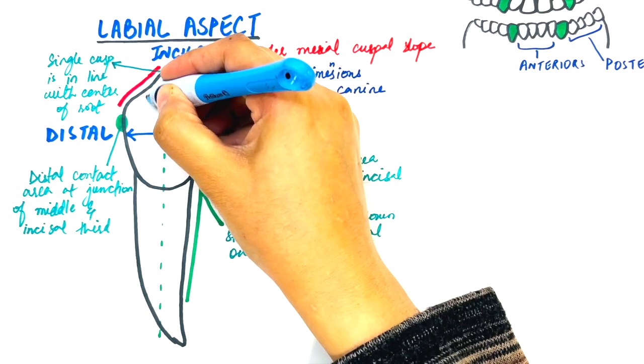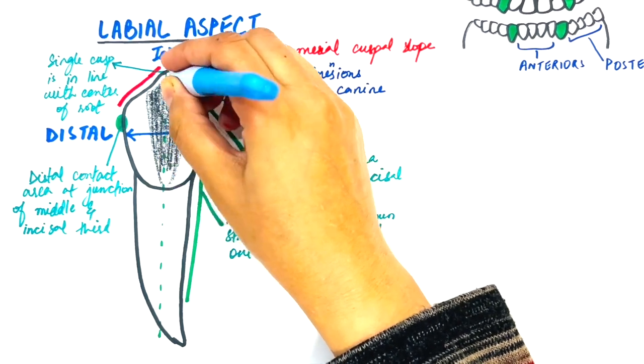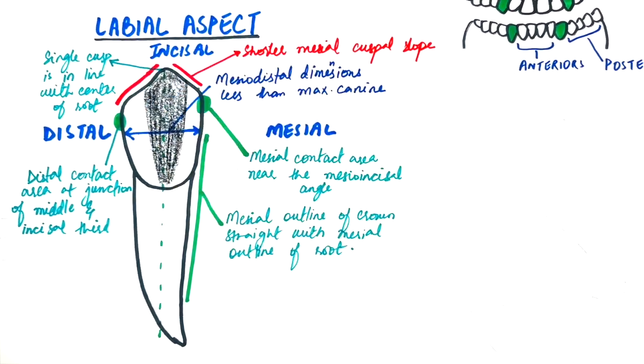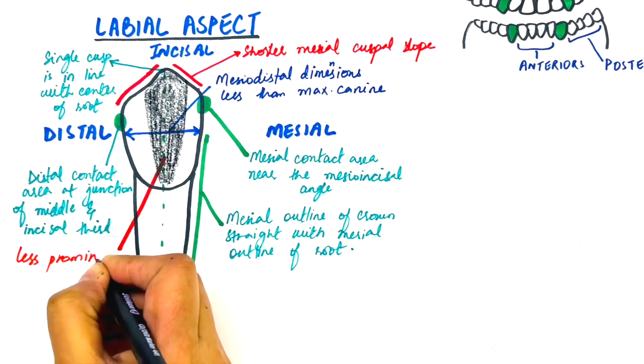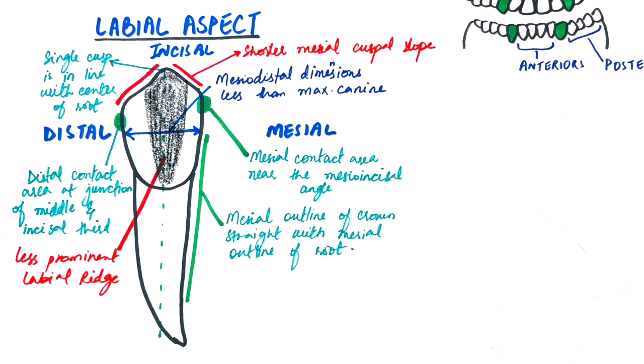The labial ridge, which makes the middle lobe of the tooth on the labial surface, and is a continuation of the cusp tip on the labial surface, is less prominent when compared with the labial ridge of the maxillary canine. The incisal third of the crown is slightly flattened mesial and distal to the labial ridge, making the developmental depressions less prominent on the labial surface of the mandibular canines.